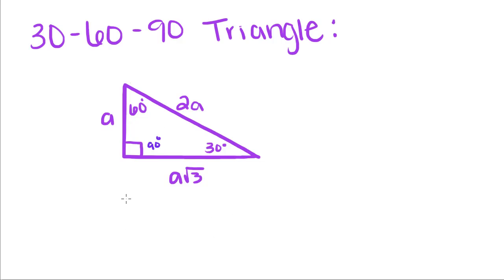This length right here is just A. This hypotenuse is 2 times this side. This side is A times the square root of 3, and we're going to use those to find out the length of each side of the right triangle.